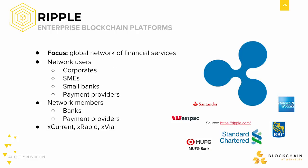Ripple is another enterprise blockchain platform focusing on creating a global network of financial services. To enable such platforms, it uses an internal cryptocurrency called XRP and runs a federated consensus mechanism. Within the network, there are various types of participants: network members include banks and payment providers, providing core services such as processing payments and providing liquidity. The Ripple network enables them to expand payout reach and increase payment volumes.